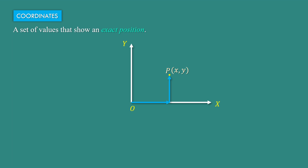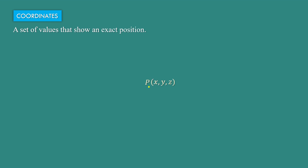Say the coordinate of this point is (X, Y). Now if we consider this point in the three-dimensional coordinate system (X, Y, Z), then at first we have to move along the X-axis, then along the Y-axis, and then along the Z-axis. Then we can find the exact location of the point P (X, Y, Z).